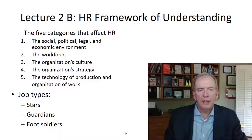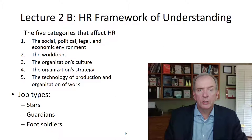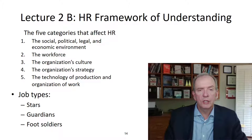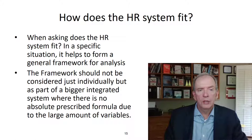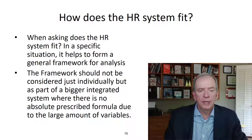We'll be looking at five categories, and after that we'll also look at job types — how we can categorize jobs. The five categories are: social, political, legal, and economic; the workforce; the organization's culture; the organization's strategy; and the technology of production and organization of work. When asking how the HR system fits in a specific situation, this framework helps with that.